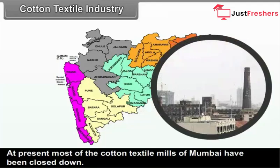Besides this, Malegao and Yevla in Nasik district also have cotton textile industry. C. Aurangabad Division — in the Marathwada region, Nandur, Aurangabad and Jalna are centres of cotton textile mills; cloth from Nandur is well known. D. Pune Division — in western Maharashtra, Kolhapur, Ichalkaranji of Kolhapur district, Sangli, Miraj and Madhavanagar of Sangli district are well known centres. Solapur and Barsi of Solapur district, and Thane and Pune districts also have cotton textile centres.